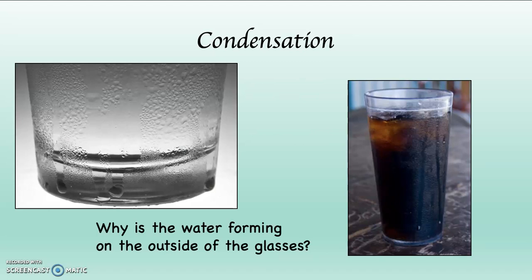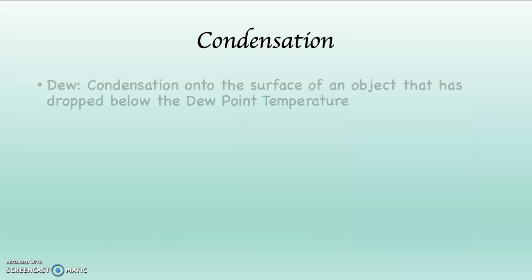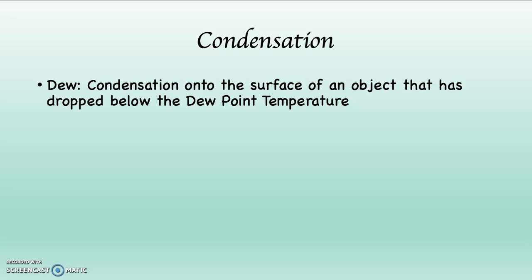Why is water forming on the outside of these glasses? Take a look at the one on the left, where you can obviously see there's water on the outside of the glass, and the one on the right, where you can see the water dripping down the glass. Did the soda magically, mystically, through osmosis, go through the glass molecules and form on the outside, losing all of its color, sugar, and flavoring, and become pure water? We know that's not what happened. What's going on is dew — condensation onto the surface of an object that has dropped below the dew point temperature.